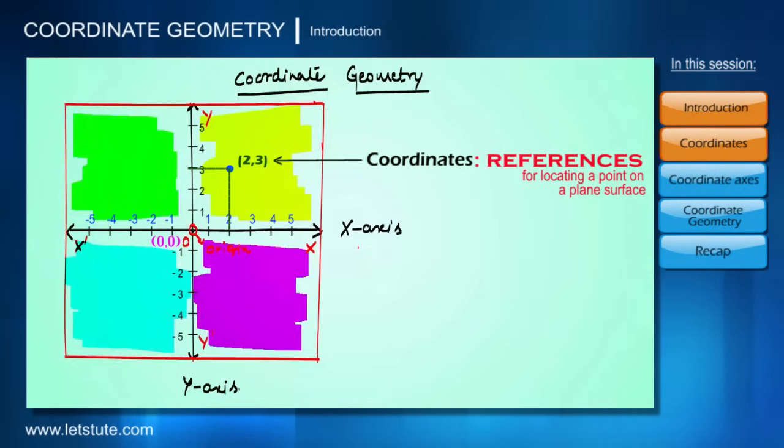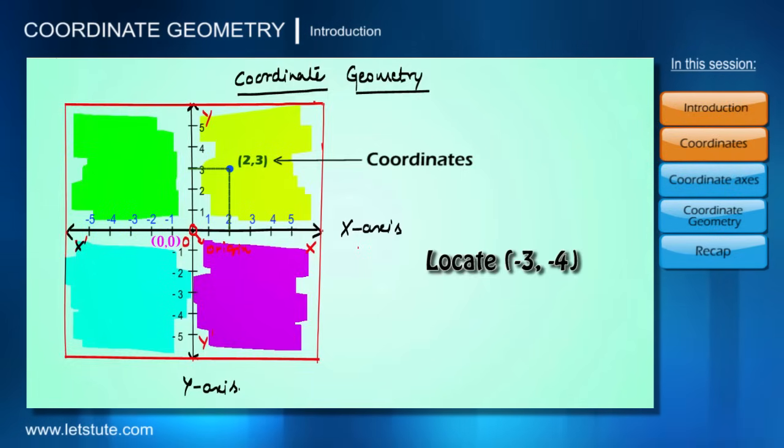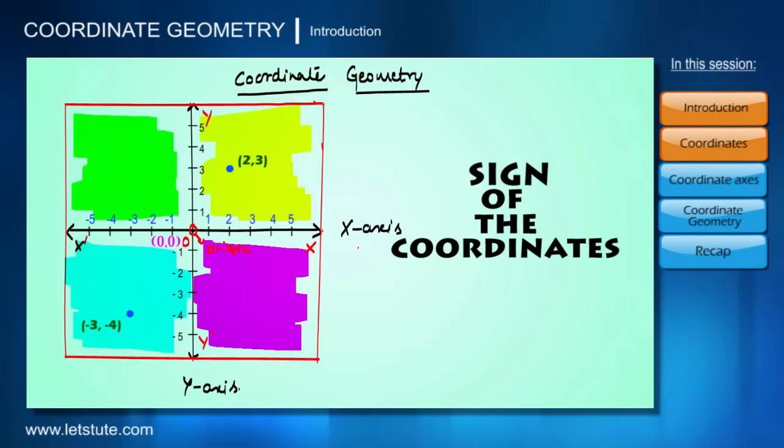Suppose we are given coordinates (-3, -4) and we want to locate this point. We first take the x-coordinate, which is -3, and the y-coordinate, which is -4. We can see that they intersect at this value. So this is how coordinates work.